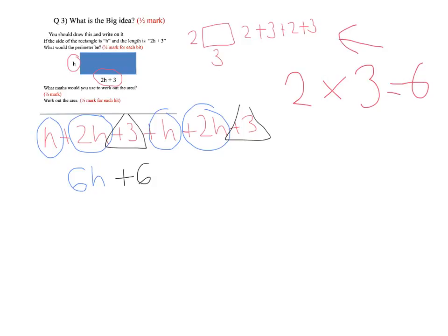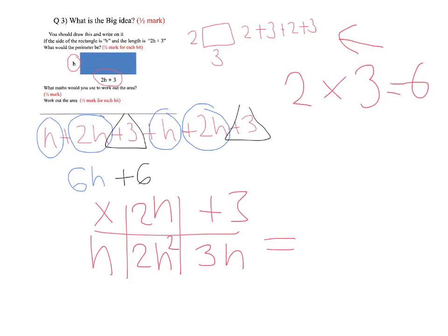So what works with number works with algebra, we're going to do using the grid h times 2h plus 3. Okay, h times 2h is going to be 2h squared. Remember h times h is h squared, so 2h squared. And 3 lots of h is going to give us 3h. So the expression for the area is going to give us 2h squared plus 3h.